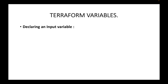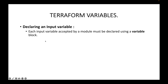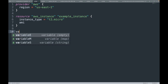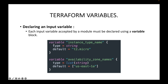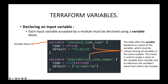To declare an input variable, each input variable accepted by a module must be declared using a variable block — similar to how we have provider blocks and resource blocks, we create a block with the keyword 'variable'. Here is an example: you write 'variable' and then give a local name or label. The label after the variable keyword is the name of the variable, and this is what you use to refer to or call the variable.